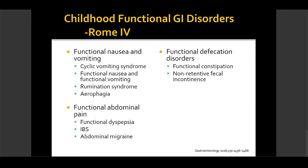Importantly, all of these disorders can coexist with other medical conditions — for example, we see irritable bowel syndrome and functional constipation in many patients with inflammatory bowel disease. These functional GI conditions are unfortunately associated with many psychological and behavioral alterations, and that psychological and environmental component plays a big role in affecting the brain-gut axis. It's always important to obtain a good history to guide management.